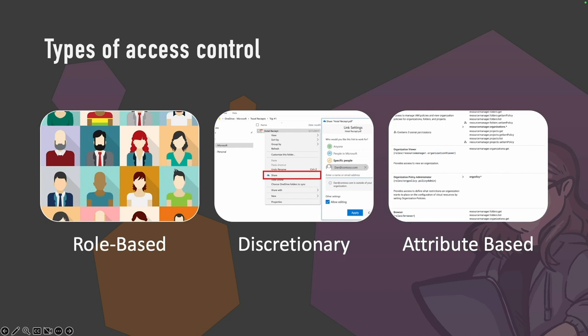There are a lot of different types of access control. The three you'll see most often are: role-based, where every user is given some kind of role that dictates what resources they have access to — think of a YouTube channel where a moderator can delete comments but can't add or delete videos. Then there's discretionary access control, where you share something with specific people, like on a cloud service. A broken version would be someone accessing it even without permission via a link.